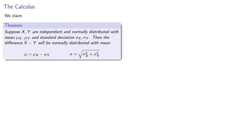We claim that if X and Y are independent and normally distributed with means mu_x, mu_y and standard deviations sigma_x, sigma_y, the difference X minus Y will be normally distributed with mean equal to the difference and standard deviation equal to the square root of the sum of the squares of the standard deviations. We can derive these formulas from multivariable calculus.